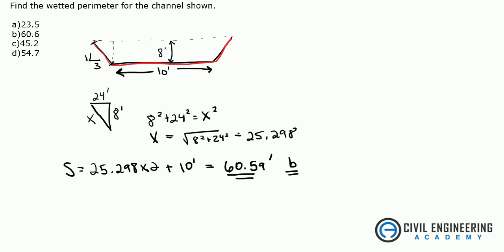The other way to solve this, if you have a good textbook that has equations for wetted perimeters for different shapes, you can use the equation B plus 2D square root 1 plus M squared. Where M equals 3, it's the slope, the horizontal dimension, B is your base, B equals 10 feet, and D is the depth of 8 feet.